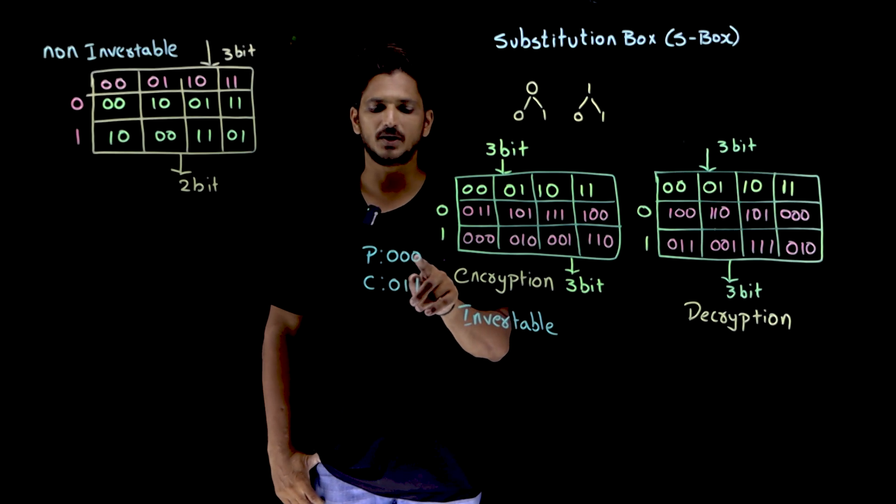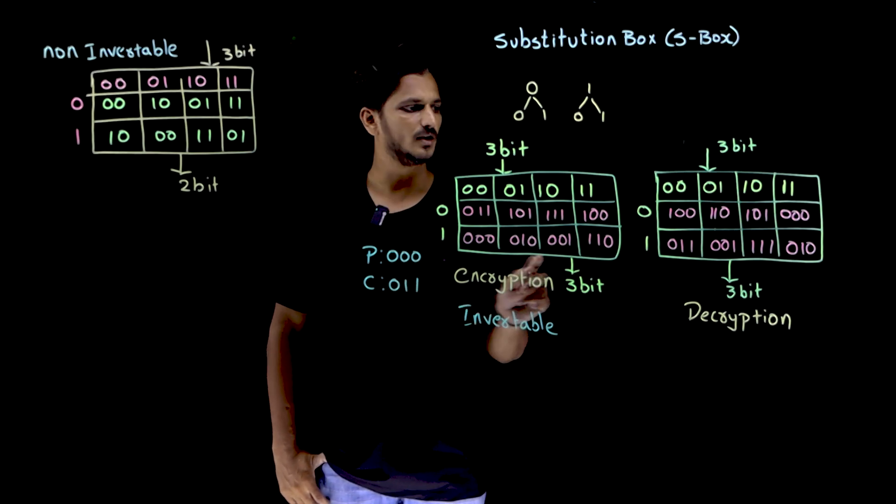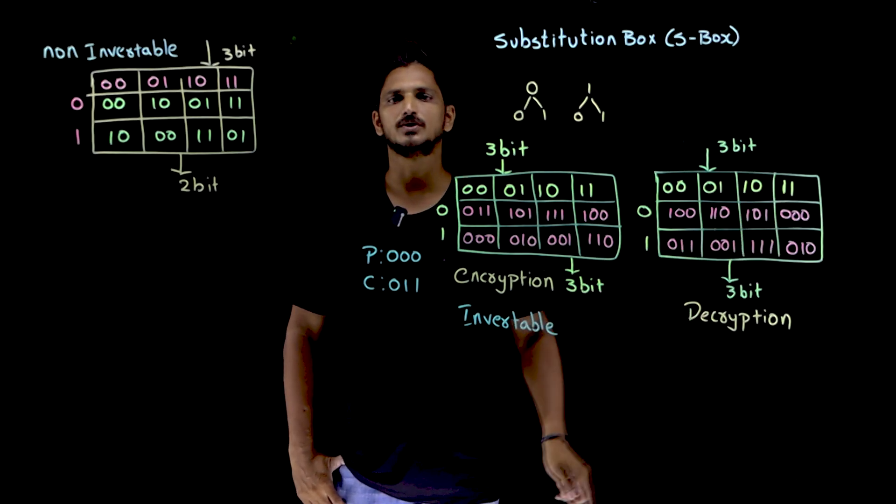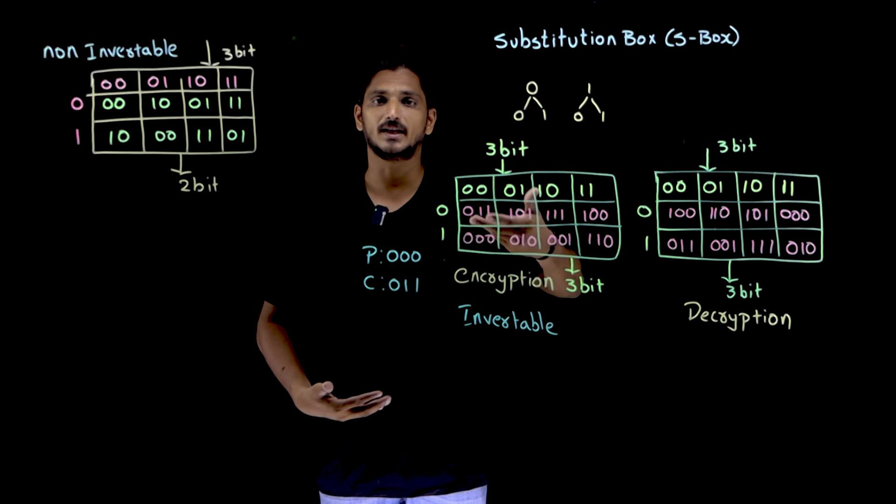See here, 0 0 0 means converted to 0 1 1. 0 1 1. What is the output? 0 0 0. You are going to get a decryption.